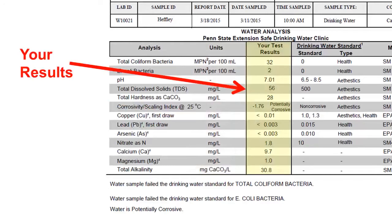The third column has the most important information on the report — the actual results found for your water supply for each analysis. For example, on this report, the water was found to have 32 colonies of coliform bacteria per 100 milliliters of water. You may also notice that some of your results have a less than sign in front of the number, like the arsenic result on this report. Labs do not report zeros on their reports because their instruments can only read down to a very low number known as the detection level. So when none of the pollutant is found in the water, the lab reports it as less than the detection level.